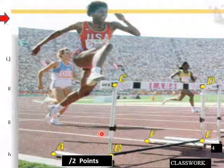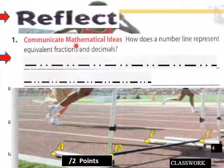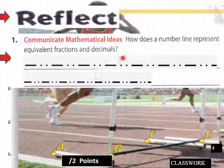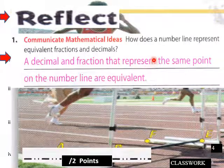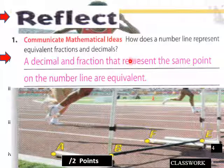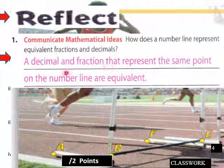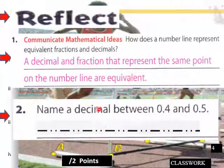That is equivalent fractions and decimals. How does a number line represent equivalent fractions and decimals? A decimal and a fraction represent the same point on a number line — they're equivalent. They're just different ways of expressing a distance from zero, whether negative or positive. So decimals and fractions both represent absolute values — distance from zero. Name a decimal between 0.4 and 0.5.